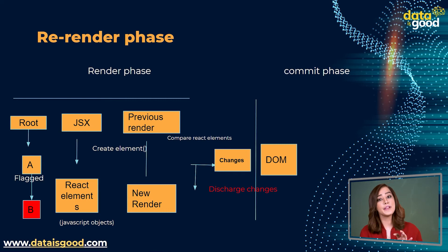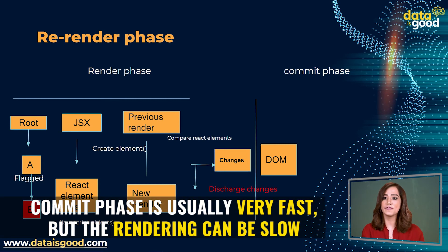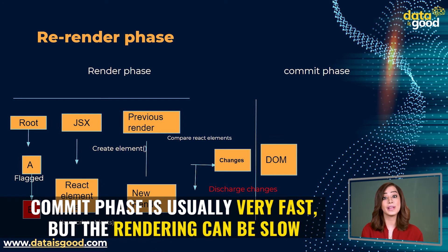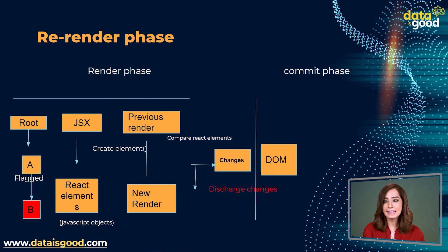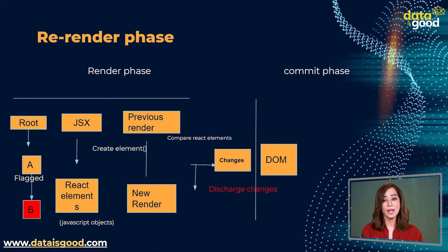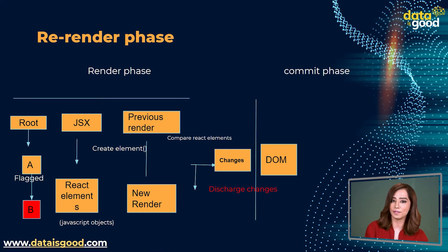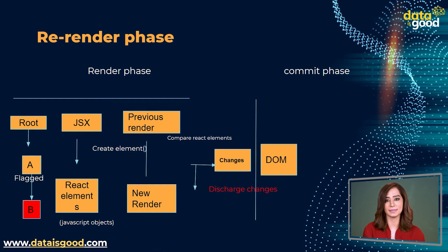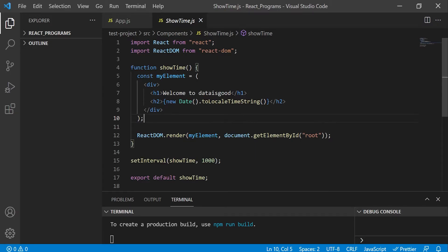If we refer to the React docs, it states that the commit phase is usually very fast, but rendering can be slow. This single line is sufficient for us to understand how components render, why they re-render, and how to optimize the rendering of components. Now let's understand this with examples.